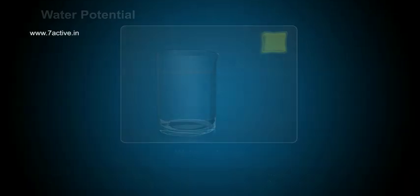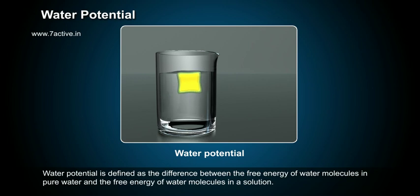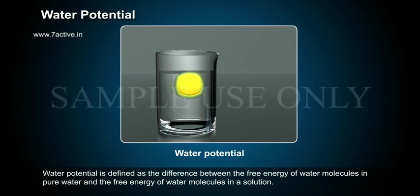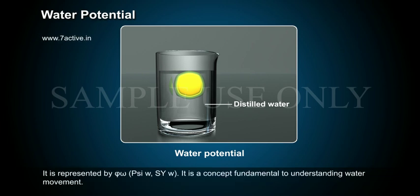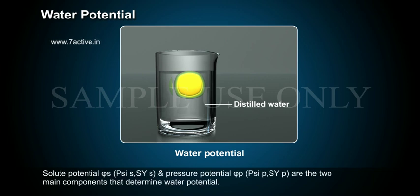Water Potential is defined as the difference between the free energy of water molecules in pure water and the free energy of water molecules in a solution. It is represented by Psi W and is a concept fundamental to understanding water movement. Solute Potential (Psi S) and Pressure Potential (Psi P) are the two main components that determine water potential.